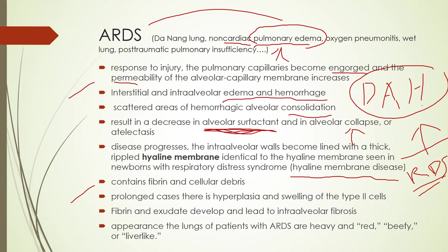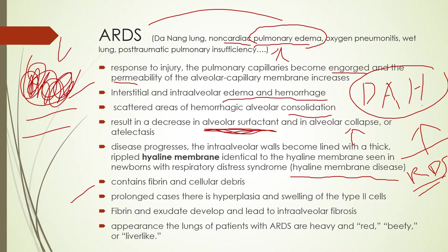Cellular debris is also going to develop — this is going to be very pus-like. The alveoli are not only filling with blood and fluid, they're also filling with cellular debris that's very similar to pus. This infected material is being deposited into the alveoli, and it's not going to clear easily because we have atelectasis and scar tissue forming that's going to keep it down in the respiratory zone.